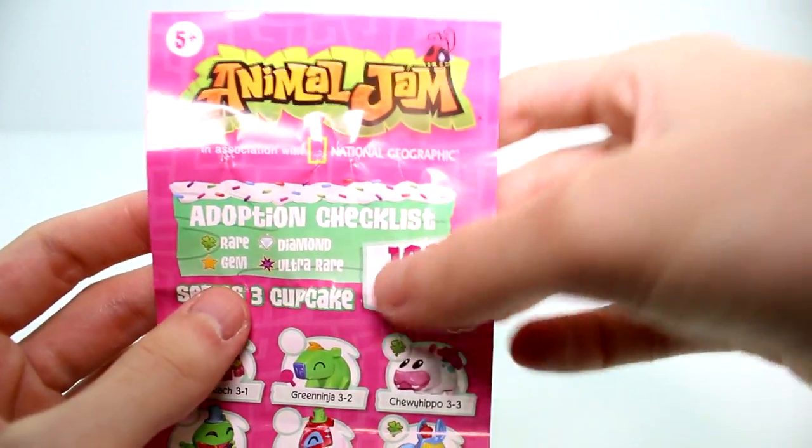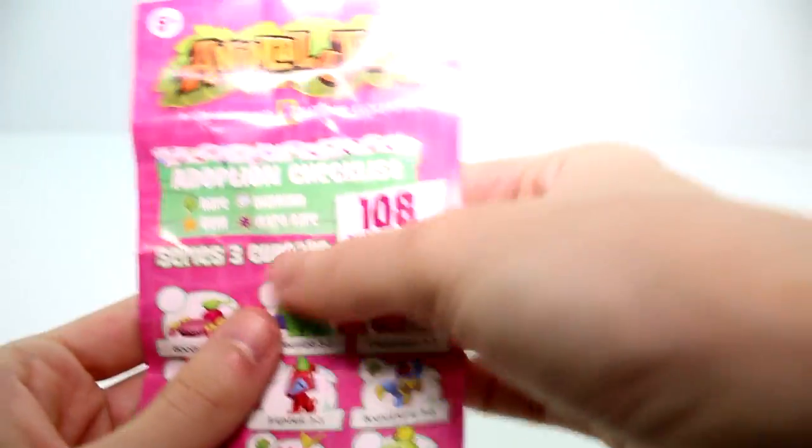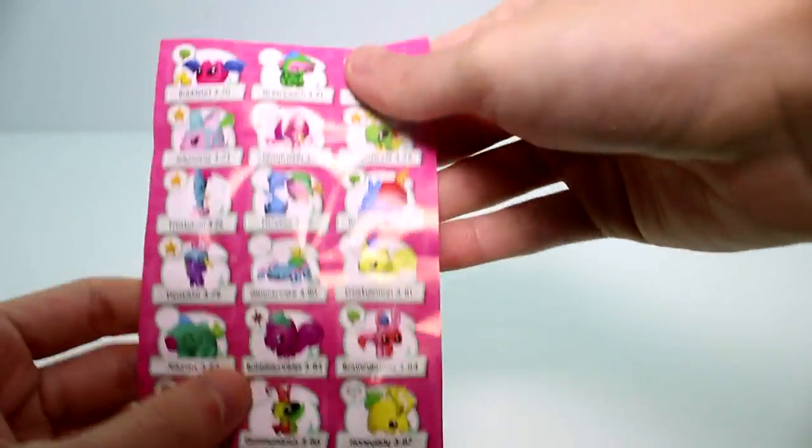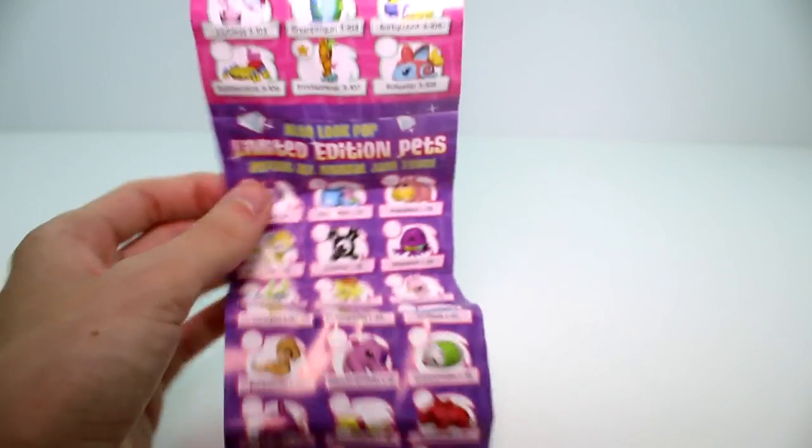Inside each pack you get a checklist, the adoption checklist series 3 cupcakes. There's so many. Oh my gosh, there's a little bat. And they all have different names. There's a front and a back. There are just so many and then limited edition pets.